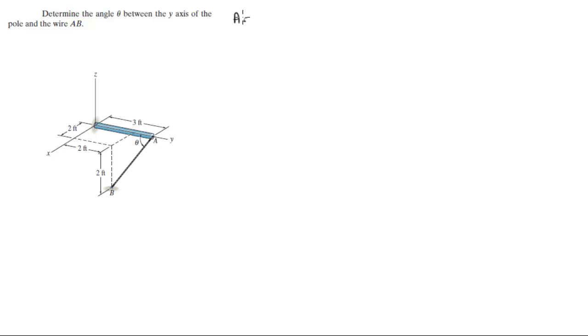So first find the position vectors of the points involved. For A is 0i plus 3j plus 0k. It sits right here at the y and z plane.